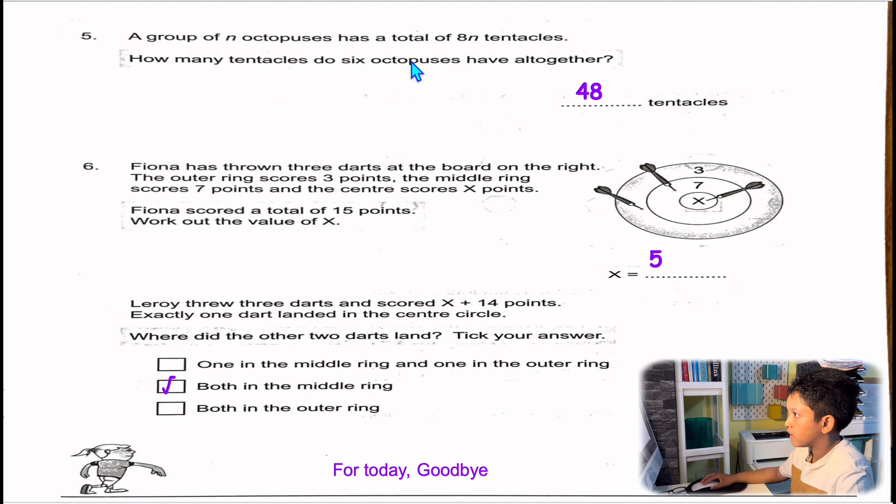8 times 6 is 48 since there's 6 octopuses. In question 5, there are 6 octopuses, so 8 times 6 will be 48.